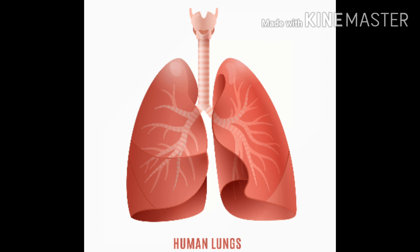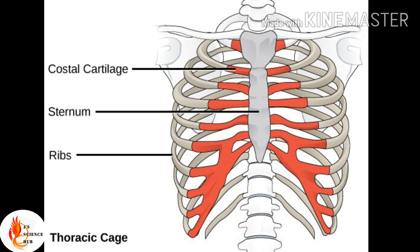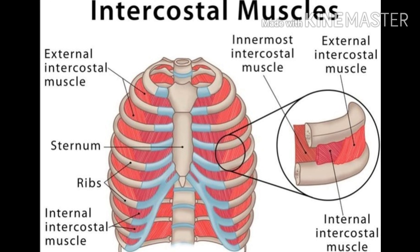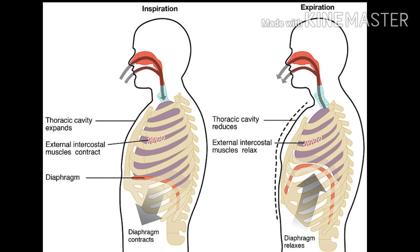The lungs are an internal organ. Most vital internal organs are protected by bony structures — for example, the brain is protected by the skull and the spinal cord by the vertebral column. Similarly, the lungs in the thoracic cavity are protected by the ribs. Intercostal muscles are present within the ribs. The lower limit of the thoracic cavity is the diaphragm, which separates the abdomen from the thoracic cavity.